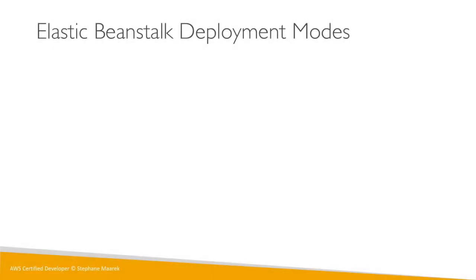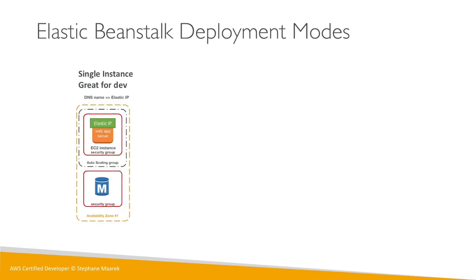Here is a very popular question from the exam — the exam will ask you about deployment modes for Elastic Beanstalk and which deployment mode is better for which situation. You need to understand each and every option for Elastic Beanstalk deployments. We've seen the single instance deployment, which is great for development: one EC2 instance with one Elastic IP and one Auto Scaling Group, all in one AZ, with the DNS name mapping straight to the Elastic IP.